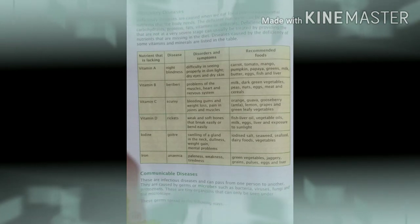Then the nutrient that is lacking is iodine. The name of disease is goiter. Disorders and symptoms are swelling of a gland in the neck, dullness, weight gain, mental problems. The recommended foods are iodized salt, seaweed, seafood, dairy foods, vegetables.